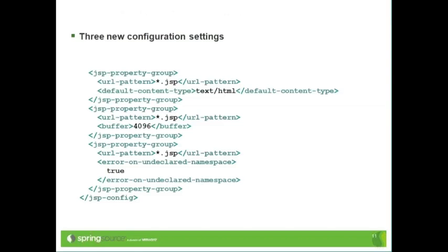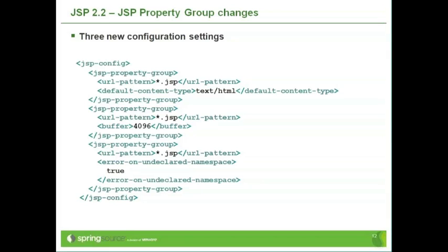In JSP 2.2, it's a lot shorter, and essentially it comes down to these three new configuration settings. These are all settings you can use in web.xml to set defaults for JSP pages. So you can set the default content type — here in this example, setting it to text HTML.